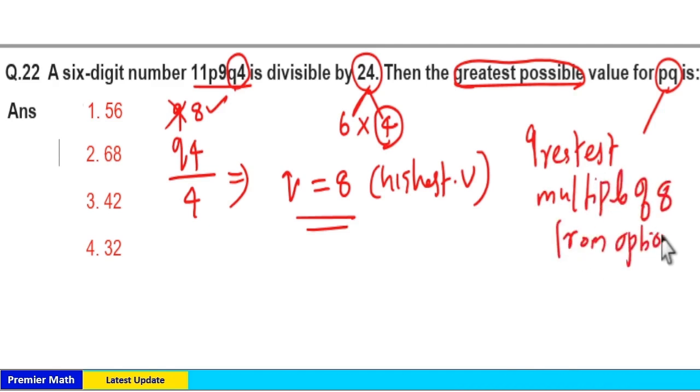That will be your answer. Here 68 is not divisible by 8, but 56 is divisible by 8. Option 1 is your answer.